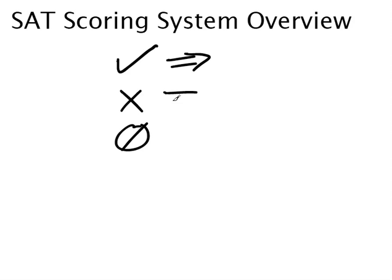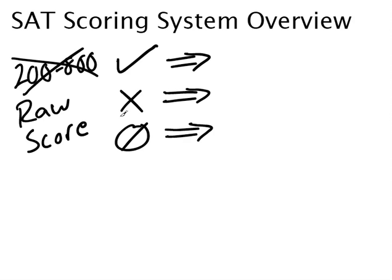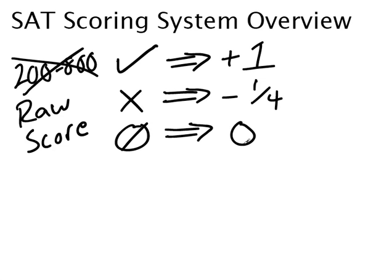I use this symbol to stand for blanks. The amount of points you get is dependent upon your response. The 200 to 800 scale is based upon what's called your raw score — the higher your raw score, the higher your score on the test. Just worry about maximizing your raw score. If you answer a problem correctly, you get plus one point. If you answer incorrectly, you get minus a quarter point. If you leave it blank, you get nothing — you gain nothing, you lose nothing.